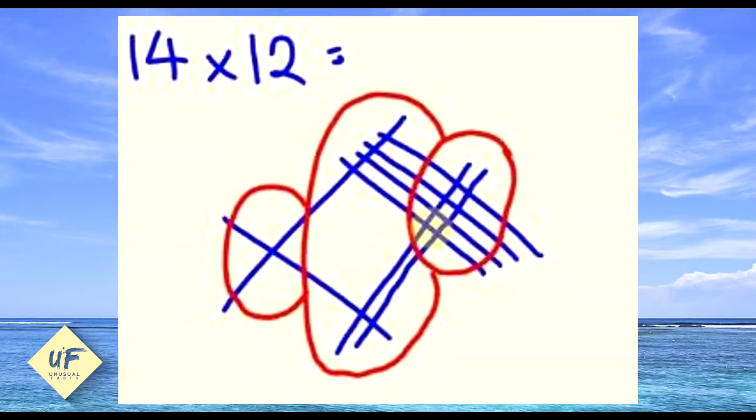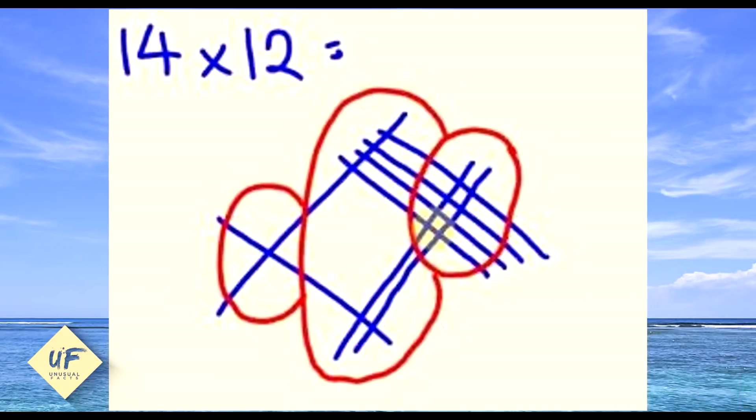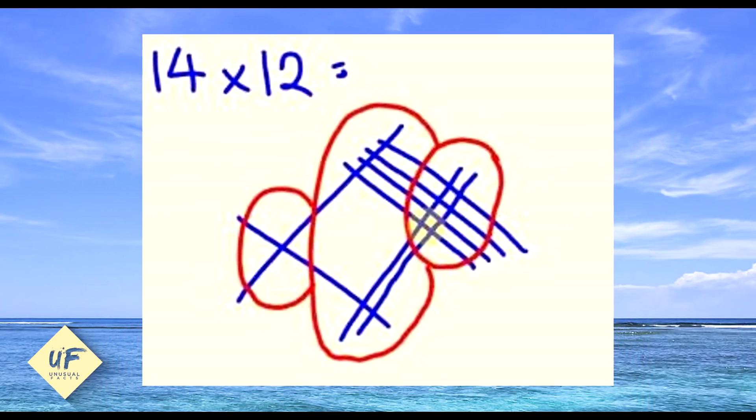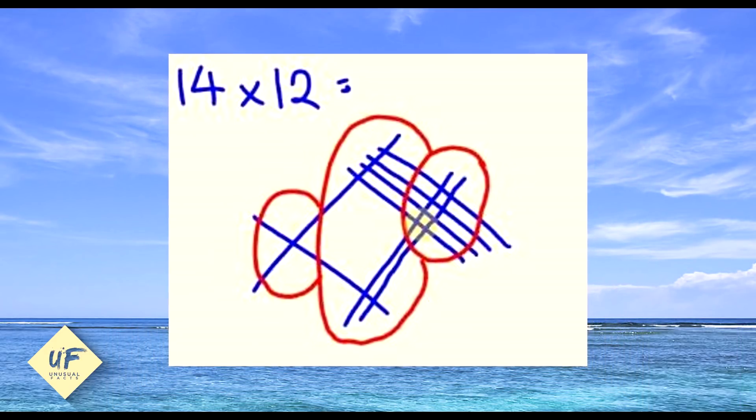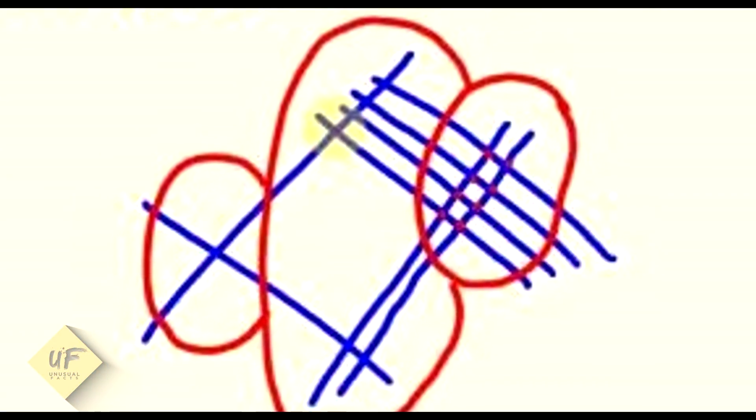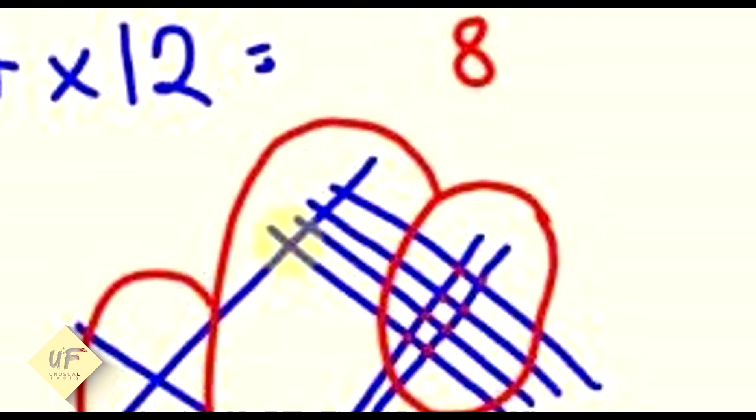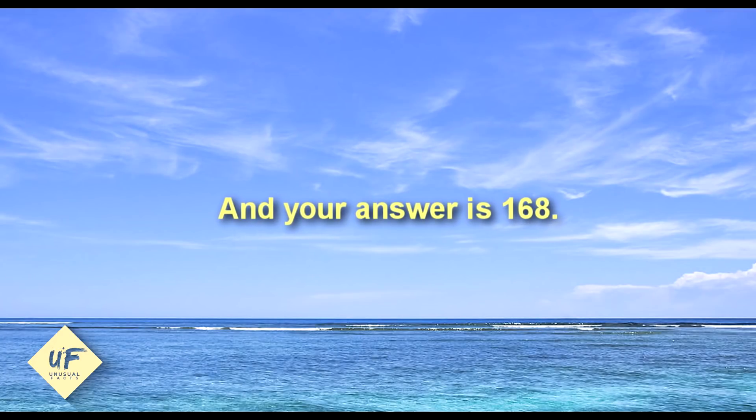In this example, 14 times 12. Split the drawing into three sections. Each of the three areas represents the hundreds, tens, and units. Count each cross point in each section and write them down one after the other. The left equals 1, middle equals 6, right equals 8, and your answer is 168.